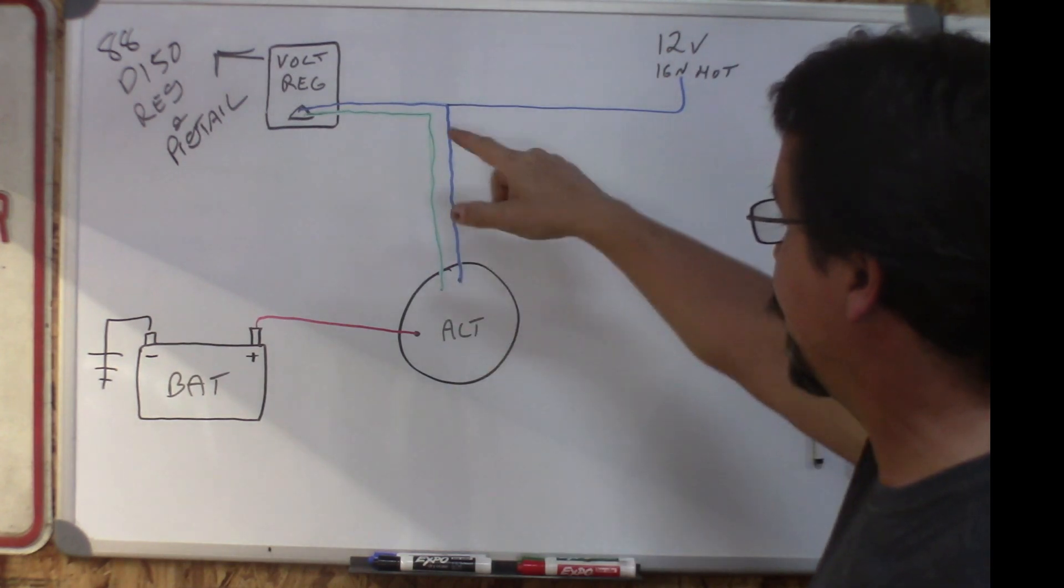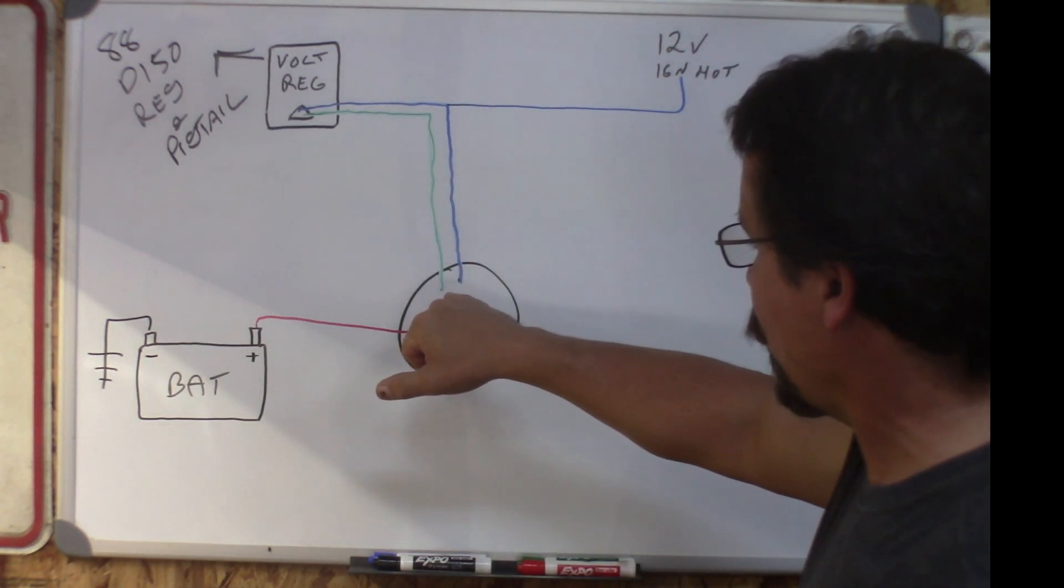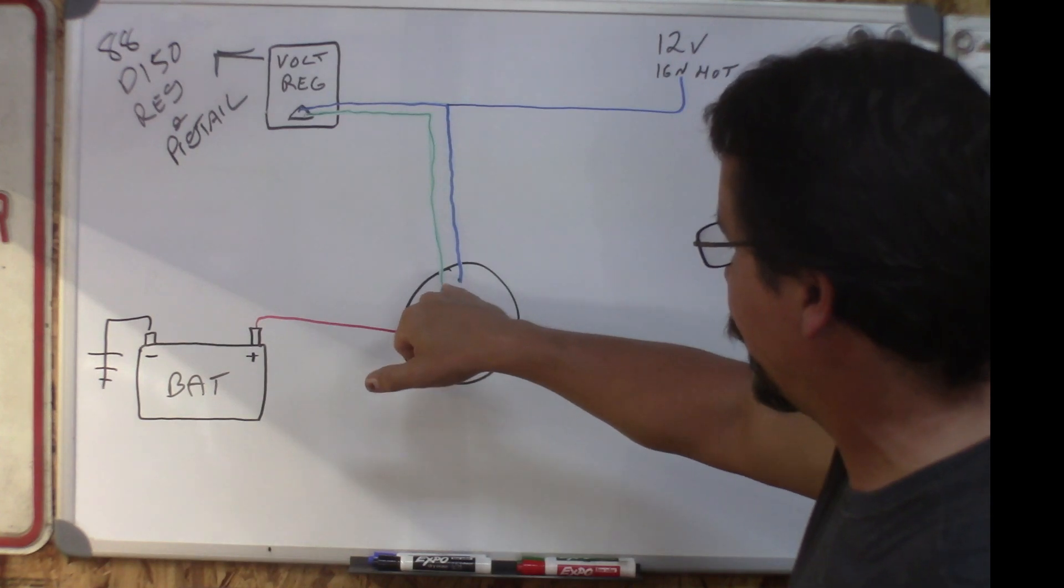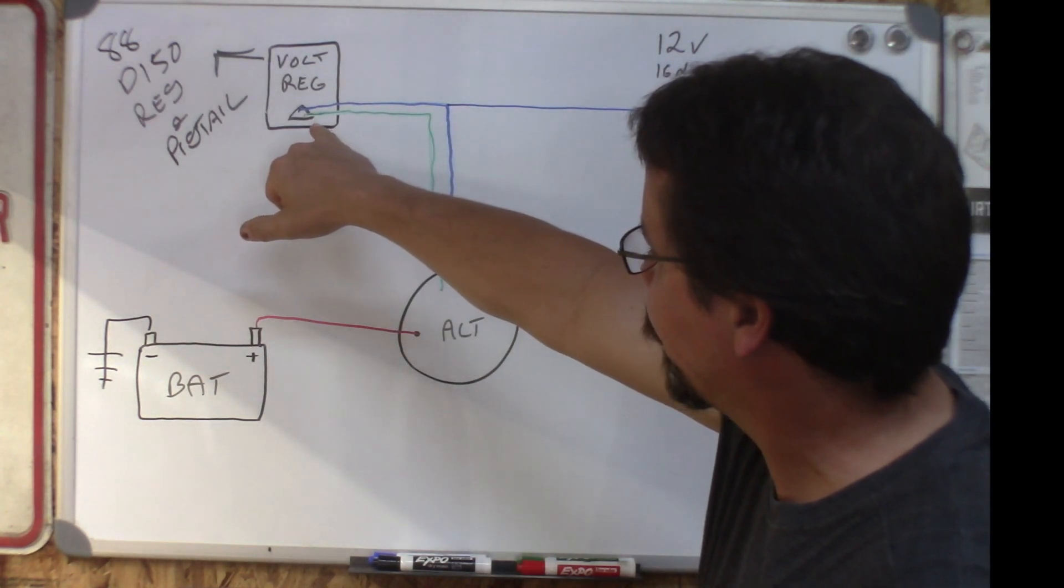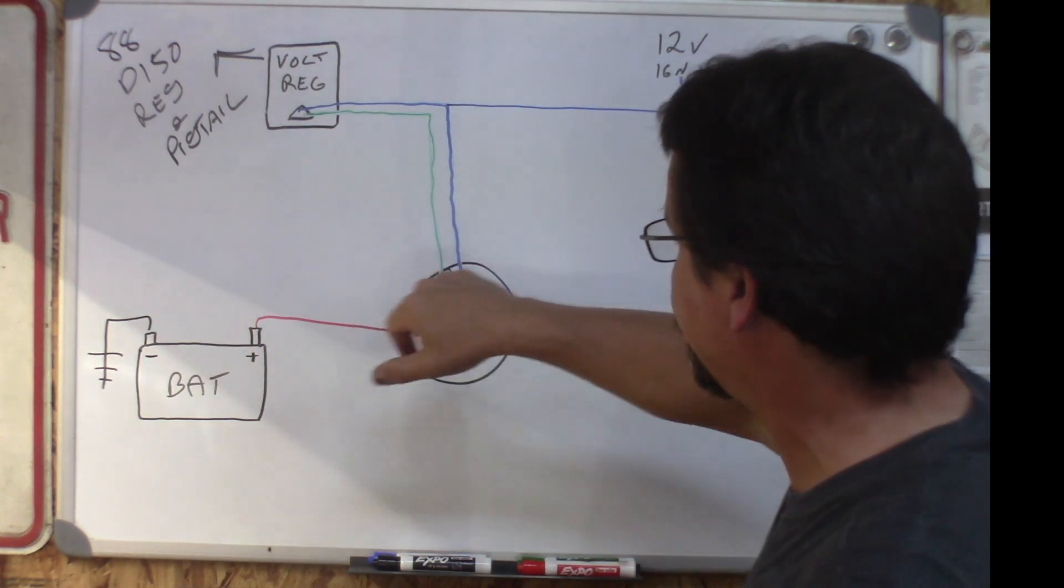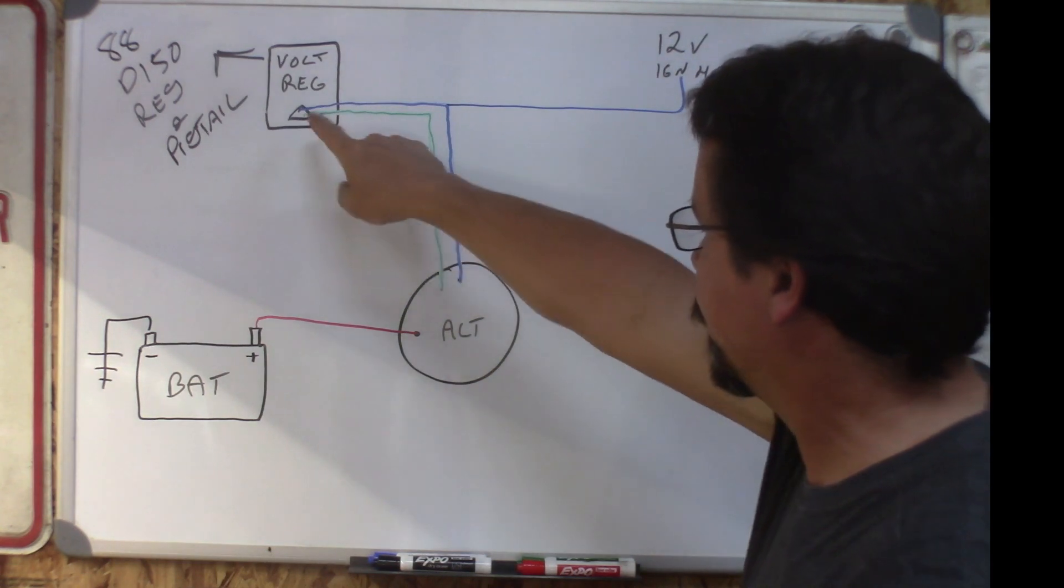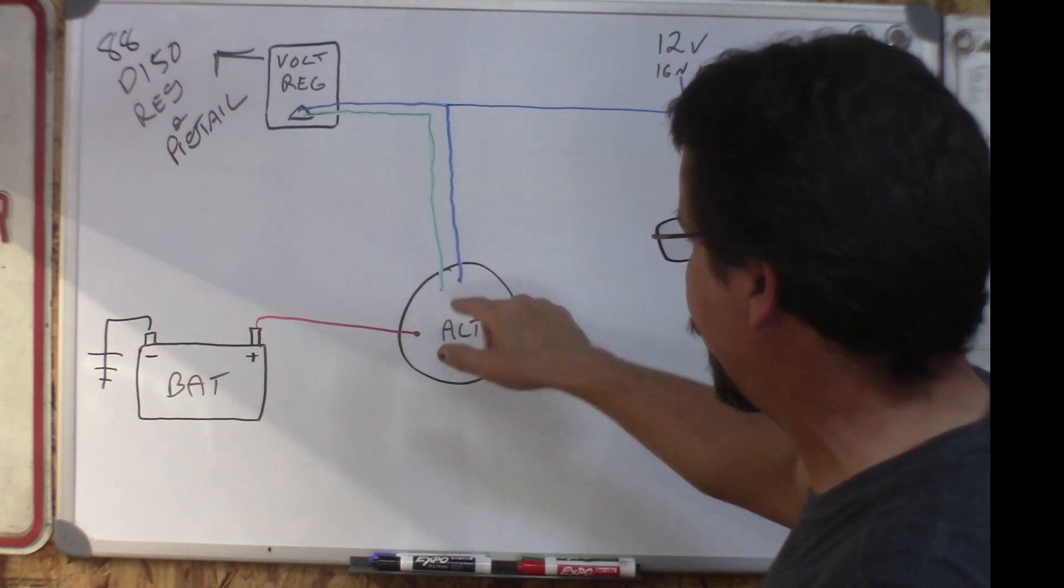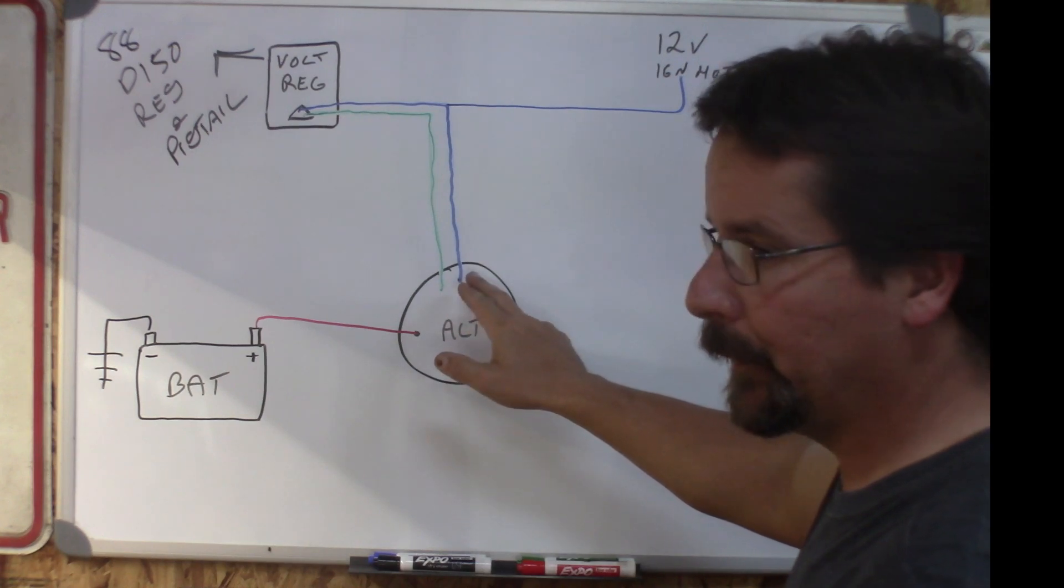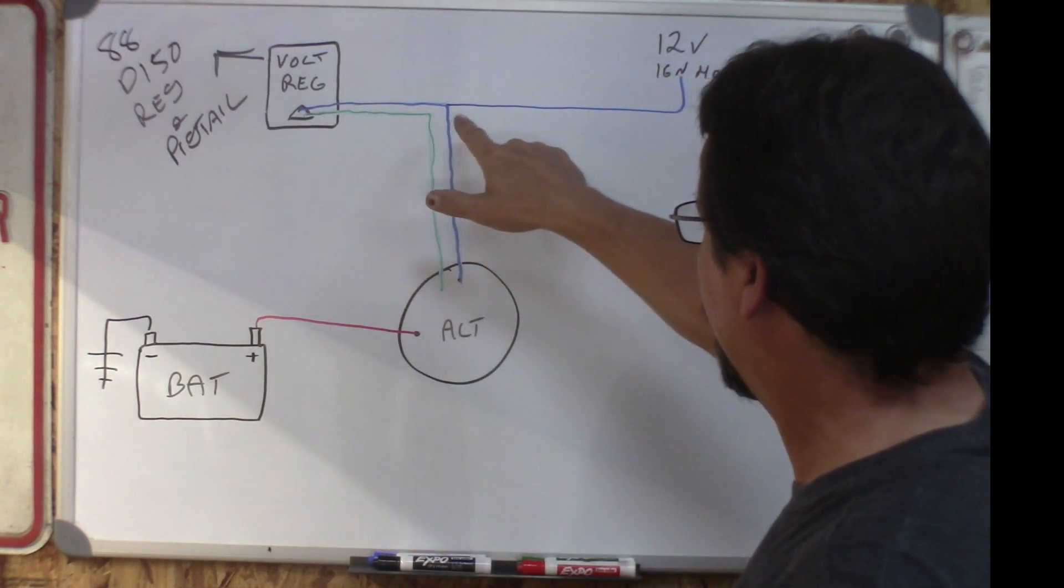The other two posts on the back of the alternator, and these are the factory wiring colors, doesn't really matter. One goes from one small post to the lower post on the regulator, you can see it's kind of in a triangle shape, just straight there. The other, the top post on the regulator goes to the other post on the alternator. Now these two don't matter if you switch them side to side.